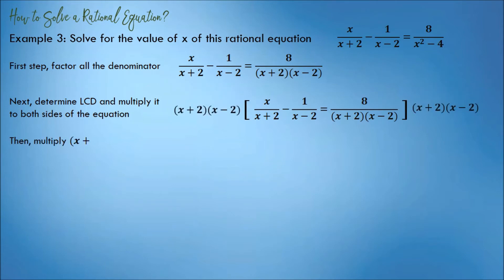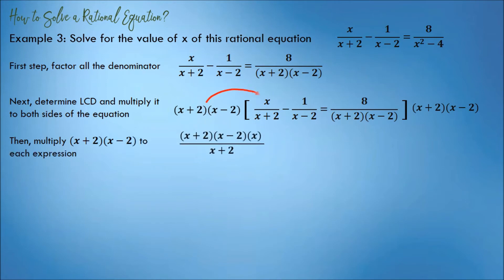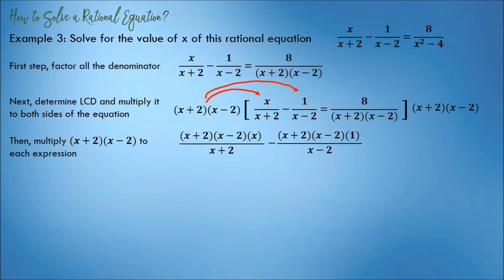Then, multiply the LCD to each expression. (x plus 2) times (x minus 2) times x over (x plus 2); minus (x plus 2) times (x minus 2) times 1 over (x minus 2); equals (x plus 2) times (x minus 2) times 8 over (x plus 2) times (x minus 2).